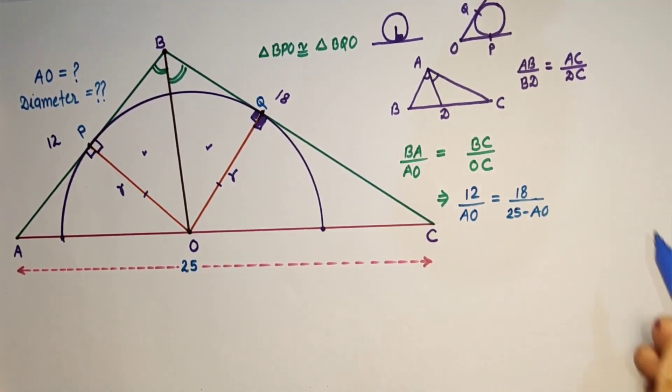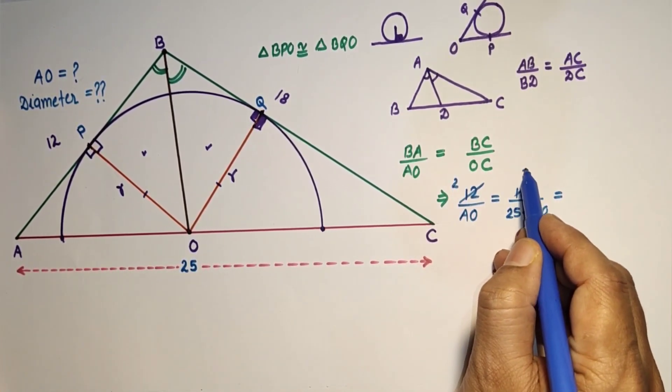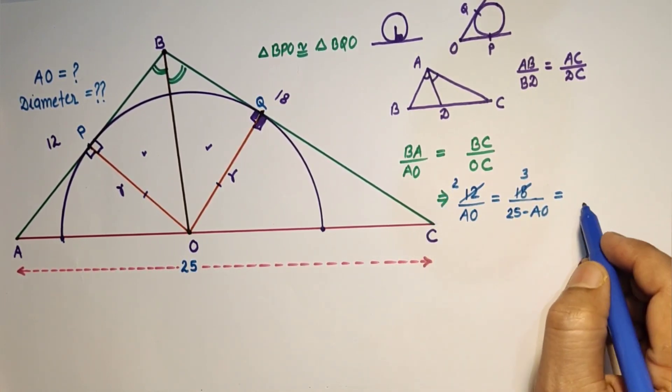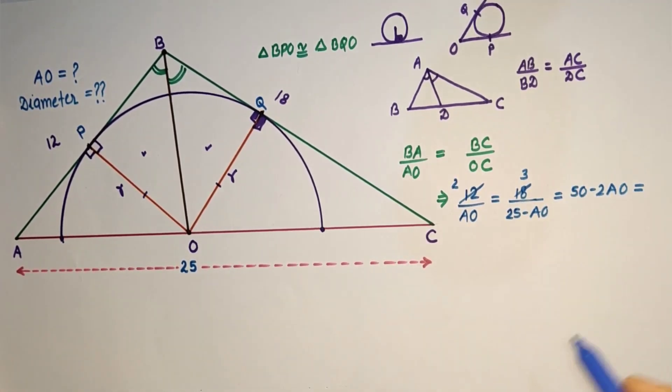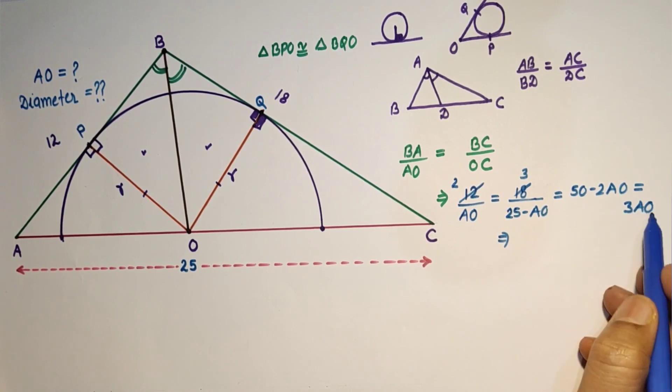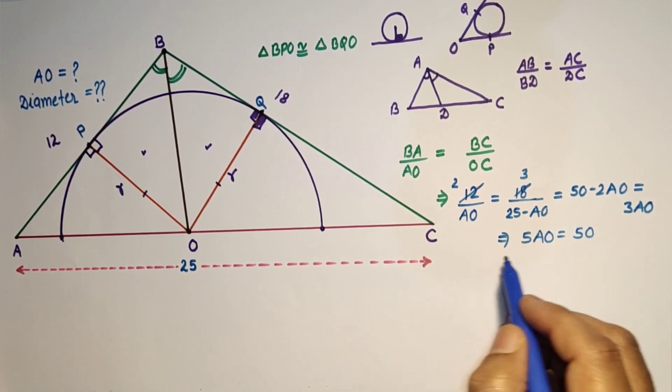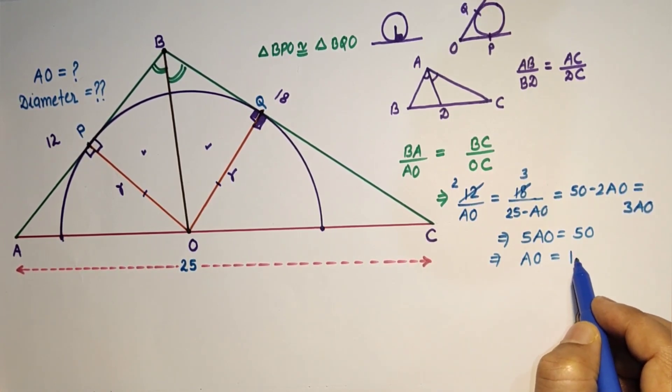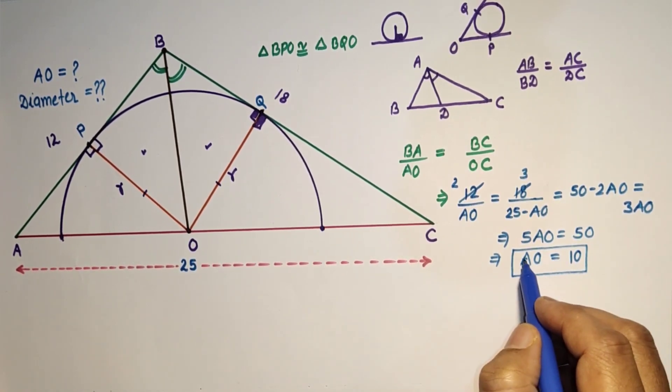And if we simplify it, we can cancel this by 6: 2 and 3. So 2 into 25 minus 2AO, that is 50 minus 2AO, that is equal to 3AO. 2AO plus 3AO is equal to 50, and that is AO is equal to 50 divided by 5 which is 10 units. So we found AO as 10 units. The first answer.